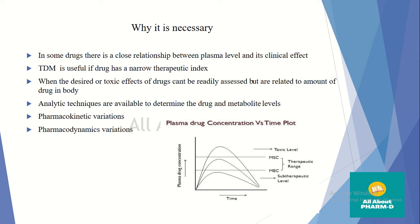We need to understand the relationship between drug dose, plasma concentration, and time — this is essentially pharmacokinetic variation. If the drug concentration and plasma levels are out of the therapeutic range, they can create toxicity. Pharmacokinetic variability refers to the concentration of the drug at the receptor site; if drug concentration at the receptor site varies, the response will vary.